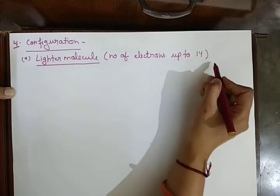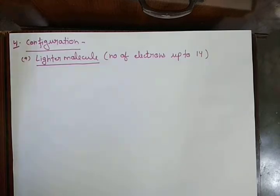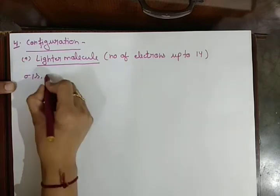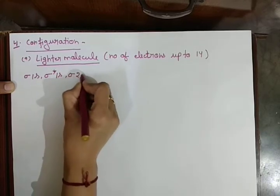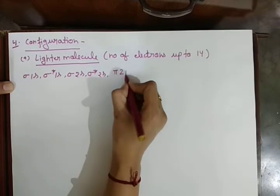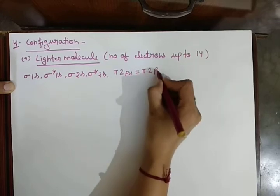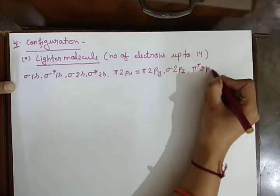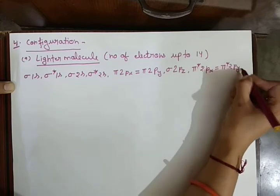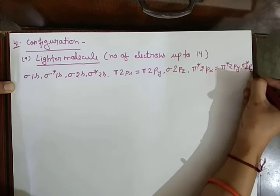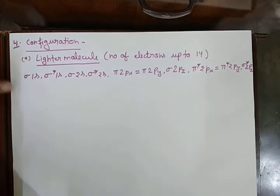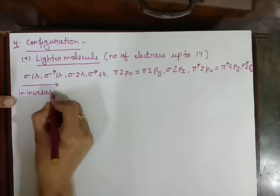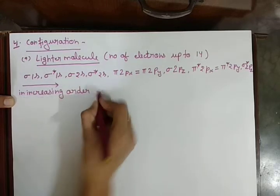Molecules in which the number of electrons is more than 14 are called heavier molecules. For lighter molecules, the configuration sequence is: sigma 1s, sigma star 1s, sigma 2s, sigma star 2s, pi 2px equal to pi 2py, then sigma 2pz, pi star 2px equal to pi star 2py, and finally sigma star 2pz. This sequence is in increasing order of energy.